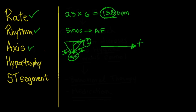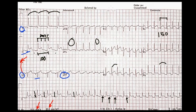Now let's look for hypertrophy across all four chambers: right atrium, left atrium, right ventricle, and left ventricle. For right atrial enlargement, we look for peaked P waves in lead II — we don't see that. In V1, we look for a large upward deflection with a small downward deflection in the P wave — we don't see that either. For left atrial enlargement, we'd expect a small positive and large negative P wave deflection in V1 — also not present. So there's no evidence of right or left atrial enlargement.